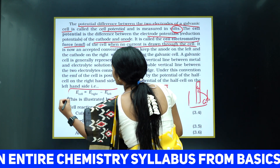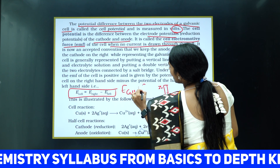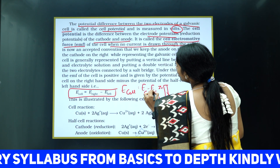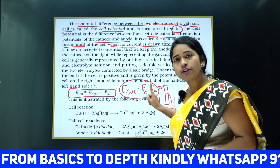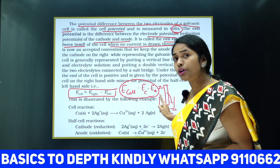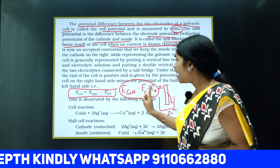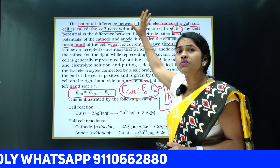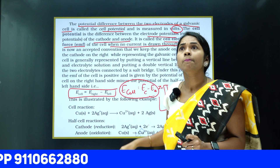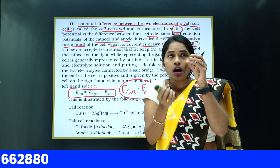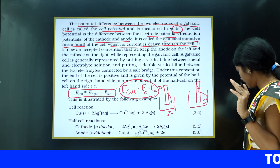What is the formula? E_cell = E_cathode − E_anode. This is the standard formula. Both the cell potentials of cathode and anode must be taken in SRP (standard reduction potential) form when using this formula. In the regular class we will discuss the full derivation, the exact meaning, and the various related formulas.